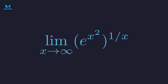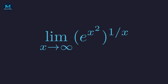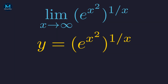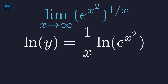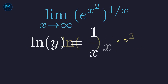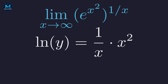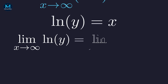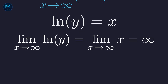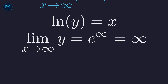Can we make the answer infinity? Absolutely. Consider the limit as x approaches infinity of e^(x²) all raised to the 1/x power. We set y equal to the expression and apply the natural logarithm. Using the power rule, the exponent comes to the front: 1/x times the natural log of e^(x²). The log and e cancel, leaving x squared, so the expression simplifies to 1/x times x², which is x²/x = x. The limit of the natural log of y as x approaches infinity is therefore infinity. Exponentiating gives us e to the power of infinity — which is infinity.